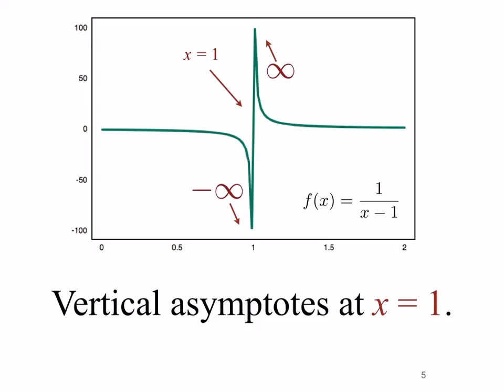Looking at the graph, the function f(x) equals one over x minus one — very similar to 1/x — has a vertical asymptote at x equals one, just as 1/x has a vertical asymptote at x equals zero. From the calculus, as we approach x equals one from the left the limit was minus infinity, and from the right it was plus infinity. We might be able to use this information to develop a way to determine when and where we have vertical asymptotes for particular functions.